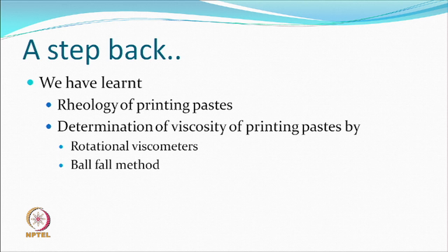We start today with a new topic, but let us first recap what we have done. Last time we talked about the rheology of printing paste — they are shear thinning and have a thixotropic property where viscosity reduces with shear, but it is a reversible process that recovers when shear forces are removed. We also covered some methods of measuring viscosity of printing paste: rotational viscometers like Brookfield, the ball fall method, and the principle involved in it.